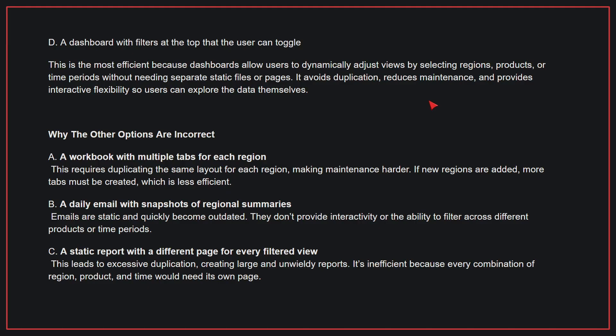Why the other options are incorrect? A: A workbook with multiple tabs for each region. This requires duplicating the same layout for each region, making maintenance harder. If new regions are added, more tabs must be created, which is less efficient. B: A daily email with snapshots of regional summaries. Emails are static and quickly become outdated — they don't provide interactivity or the ability to filter across different products or time periods. C: A static report with a different page for every filtered view. This leads to excessive duplication, creating large and unwieldy reports, as every combination of region, product, and time would need its own page. Therefore, the correct answer is D.